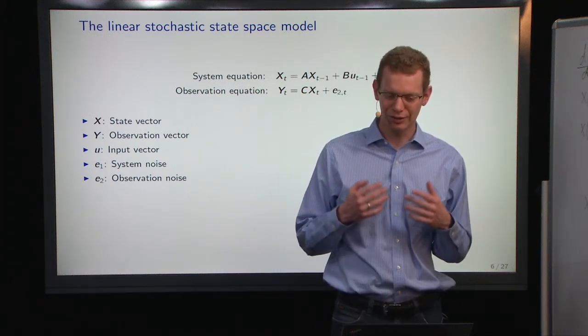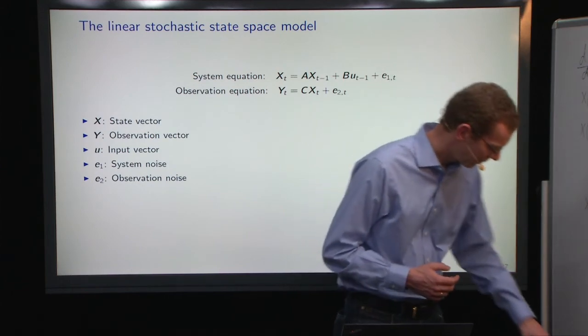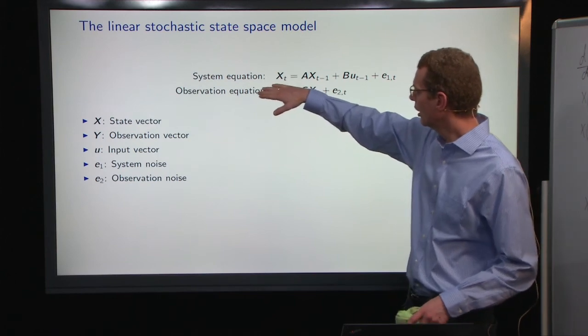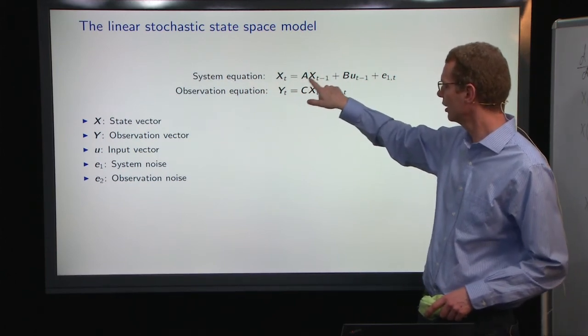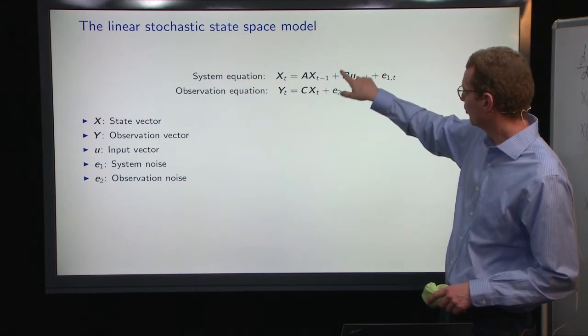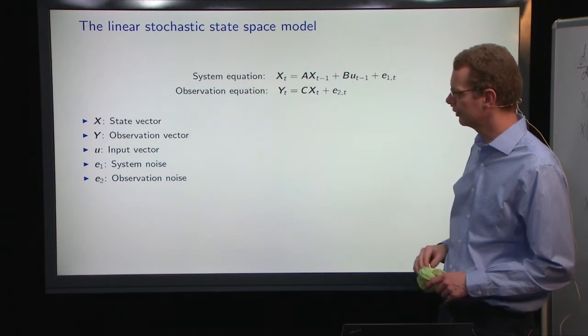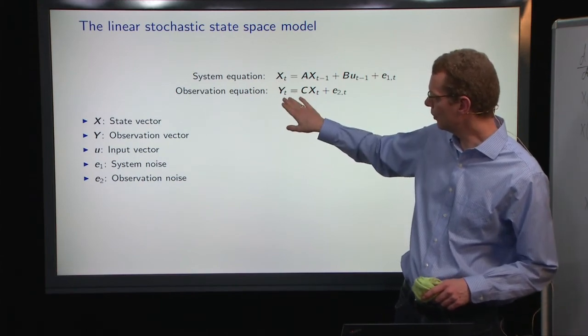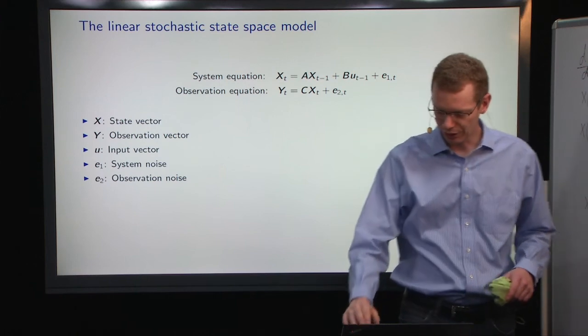So if we look at the linear stochastic state space model, as mentioned before, we have a system up here on the linear space. Then the function here is just a constant times x of t, x of t minus one, plus b times some input plus some noise, and then we observe the system. We have x being the state, y being the observations, and then we have the input and two different noises.